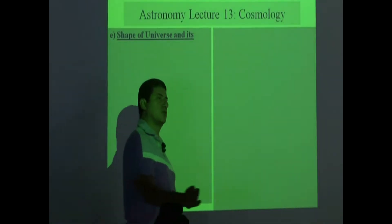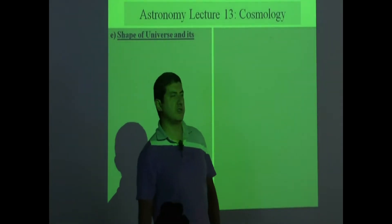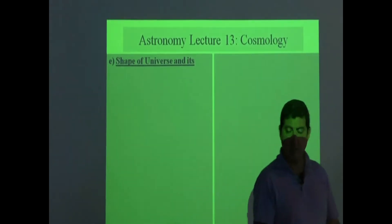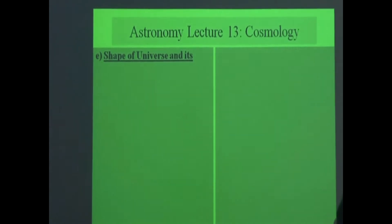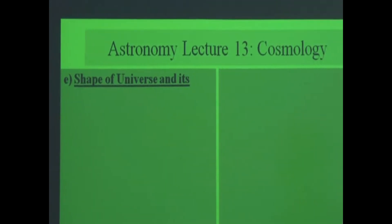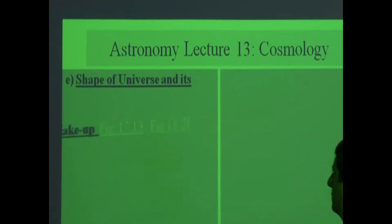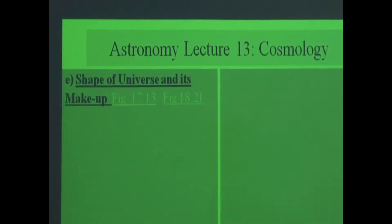Now we kind of cross over into a little different topic: what is the shape of the universe? Now that we've mentioned what happened, what events took place, and talked about what proof we have of all this — what is the shape of the universe and what is it made up of?